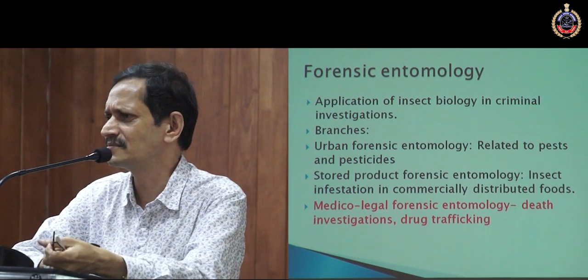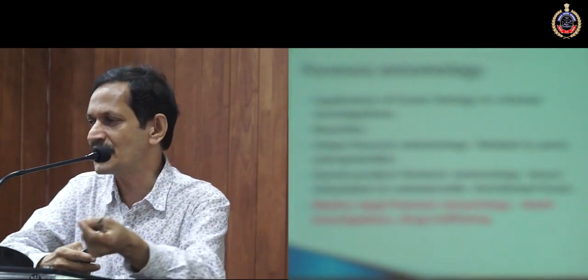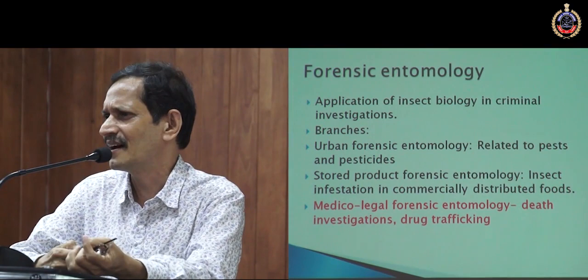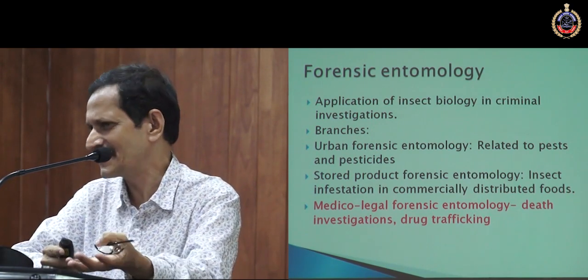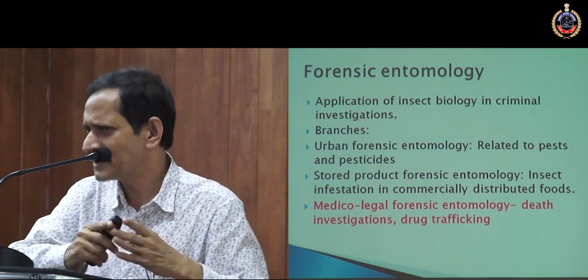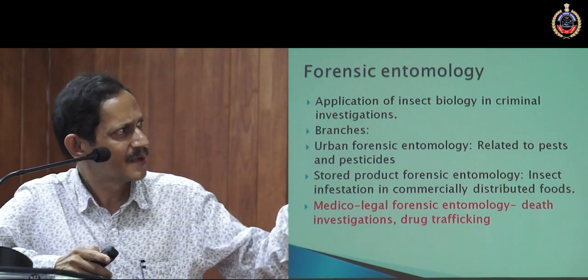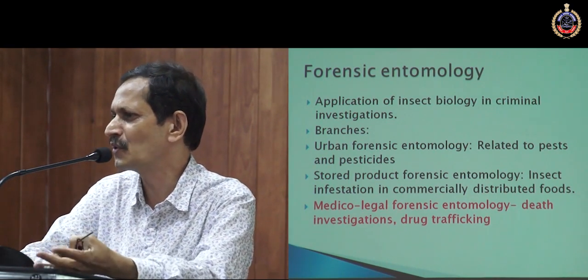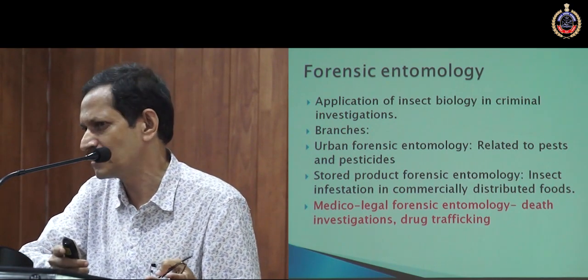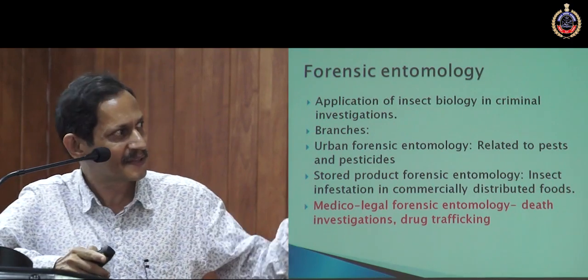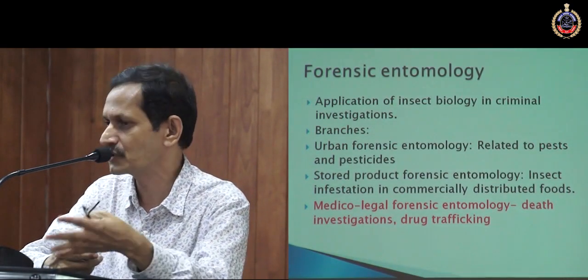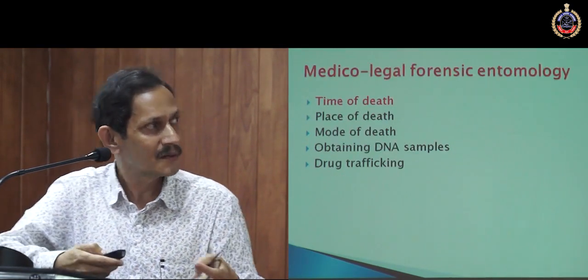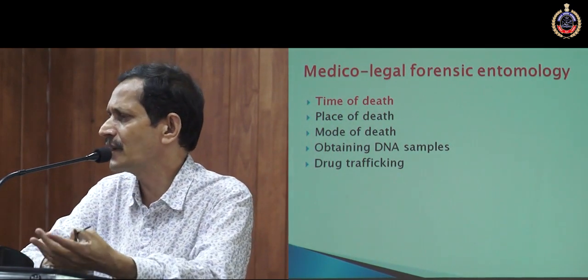We can classify forensic entomology into three. Number one is urban forensic entomology, related to pesticides, pests, litigation between homeowner and tenant, or between pesticide company and customer. Second is stored product forensic entomology, related to insect infestation of food grains — disputes between supplier and customer. The third one, important to us, is medical-legal forensic entomology, which deals with death investigation as well as drug trafficking.